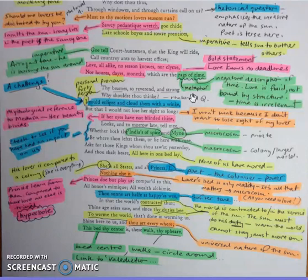She is all states and all princes' eye, nothing else is. Princes do but play us, compared to this all honours mimic, all wealth alchemy. Thou, sun, art half as happy as we. In that the world's contracted thus, thine age are seas, and since thy duties be to warm the world, that's done in warming us. Shine here to us, and thou art everywhere. This bed thy centre is, these walls thy sphere.